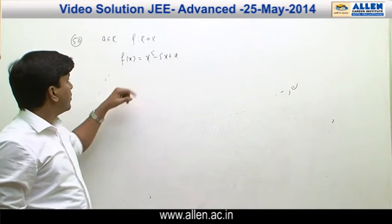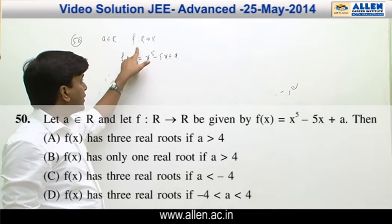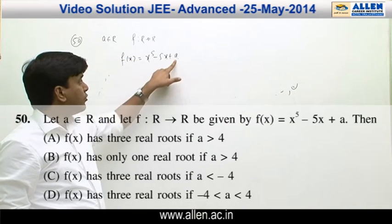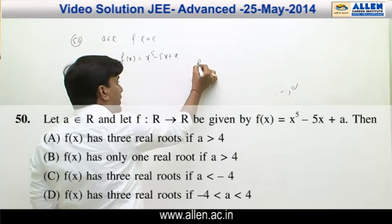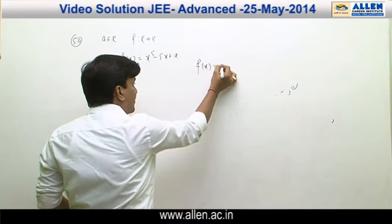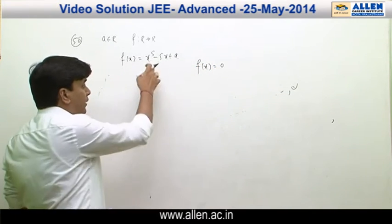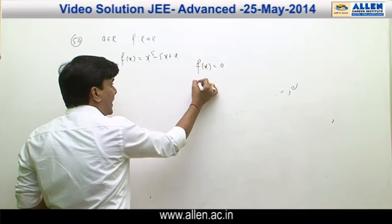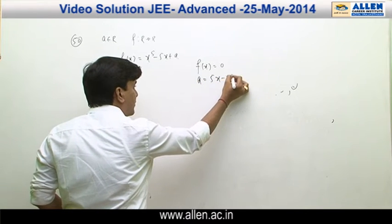In question number 50, 'a' belongs to R and the function f is defined from R to R. We have to find out the values of 'a' for which the equation f(x)=0 has 3 real roots or 1 real root. Considering this equation, we will get a = 5x minus x to the power 5.